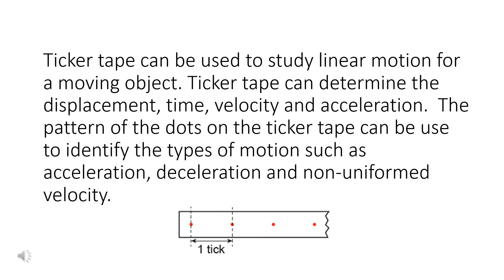Ticker tape can be used to study linear motion for a moving object. Ticker tape can determine the displacement, time, velocity, and acceleration. The pattern of the dots on the ticker tape can be used to identify the types of motion such as acceleration, deceleration, and non-uniform velocity.